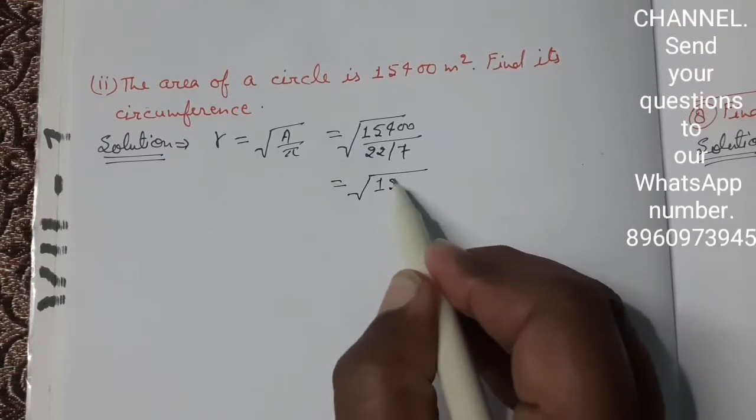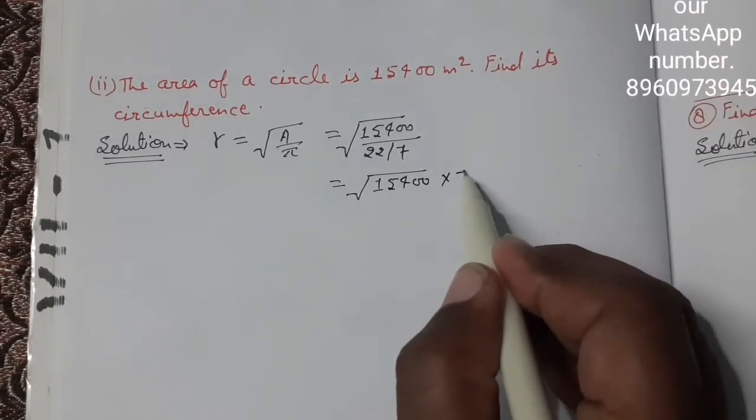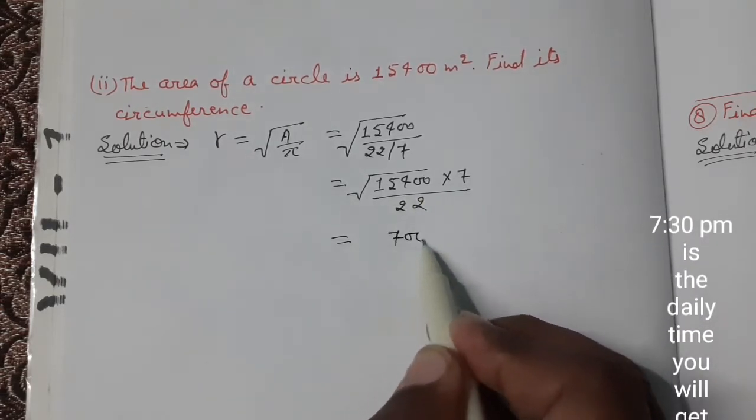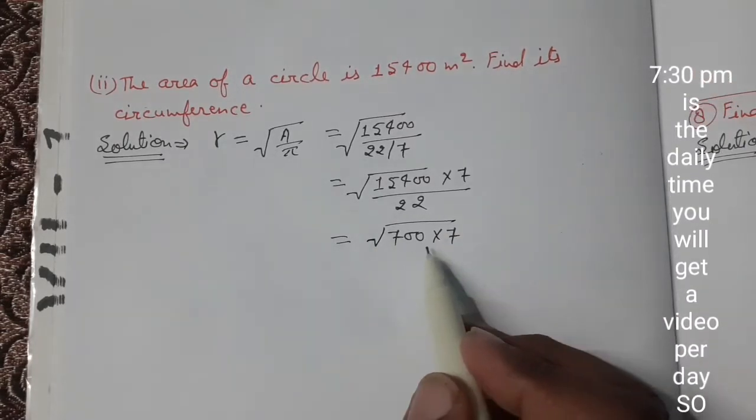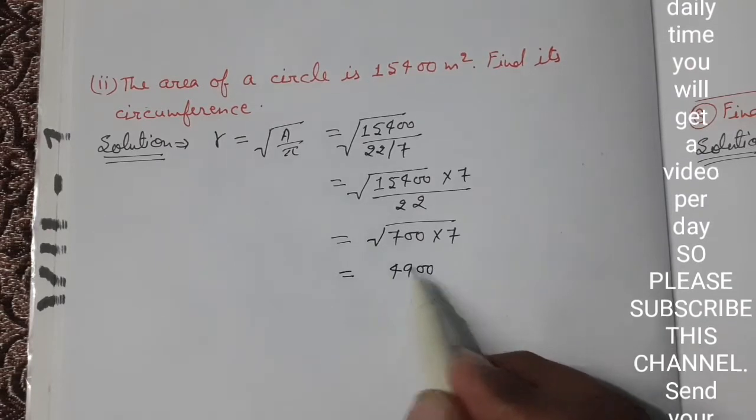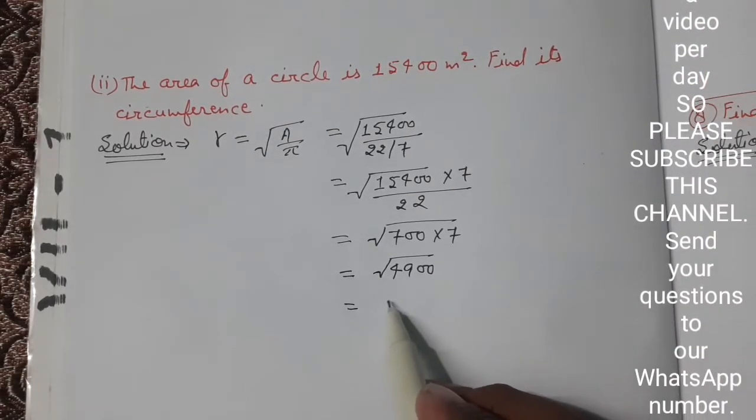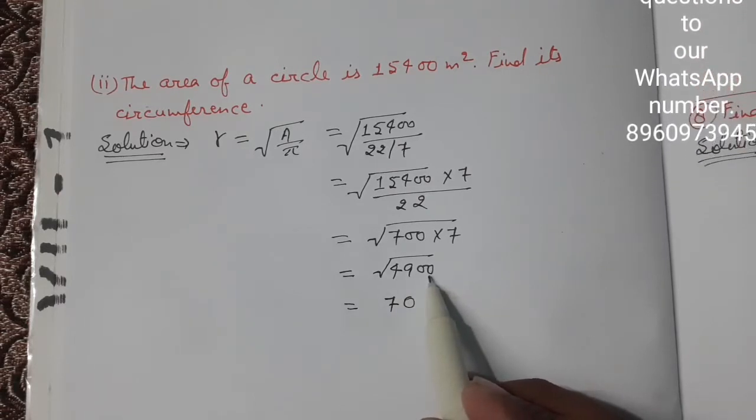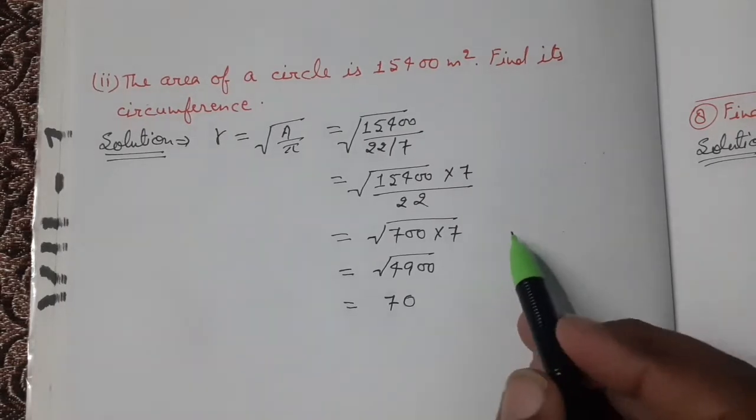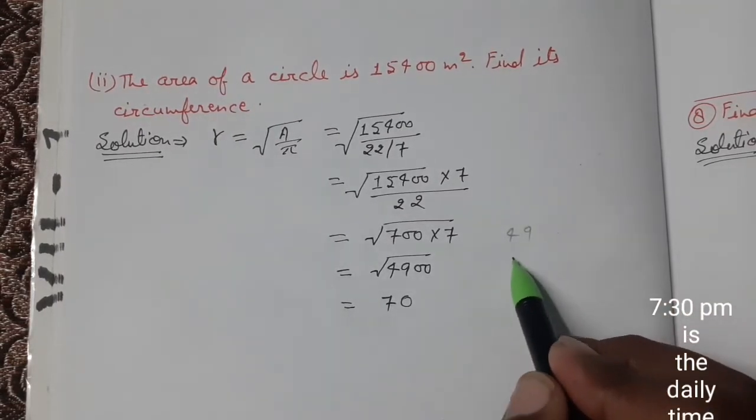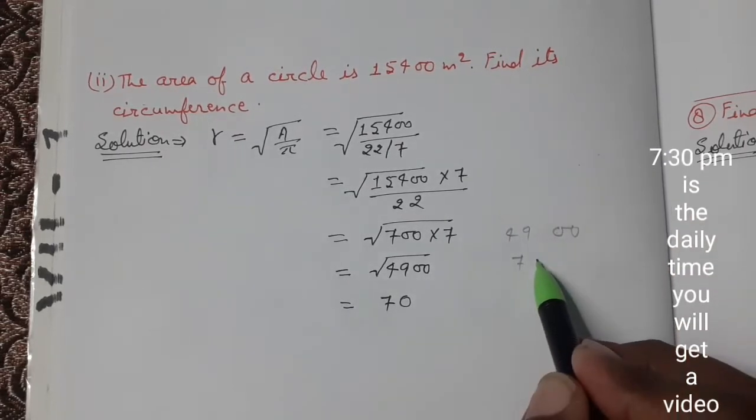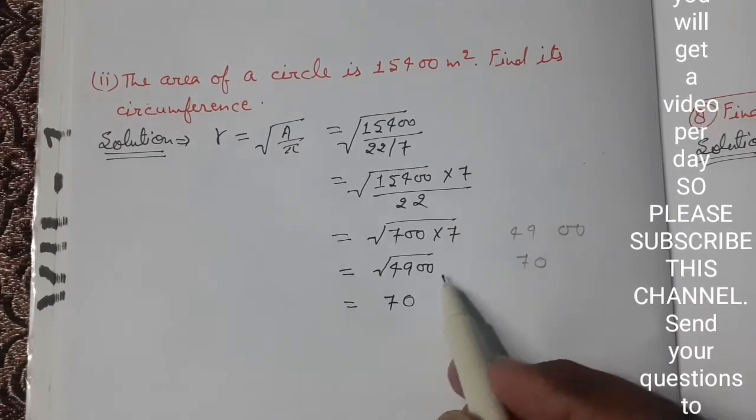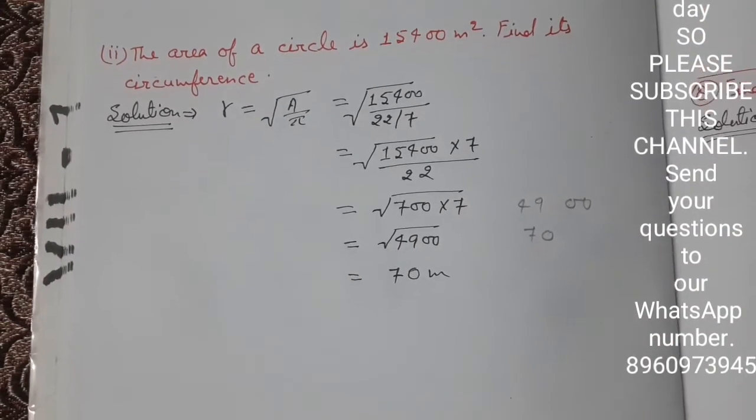The square root of area upon π: area is 15400, π value is 22 upon 7. So we get square root of 15400 multiply 7 upon 22. When you divide it you get 700 multiply 7 under the square root, which equals square root of 4900. The square root of 4900 is 70 meters, so our radius is 70 meters.